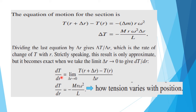So dT/dr equals the limit as delta r tends to 0 of T(r + delta r) minus T(r) divided by delta r, which equals minus m·r·omega squared by l. This is how tension varies with position — it is varying with r along the radius. Since there is a negative sign, the tension is decreasing as r increases.